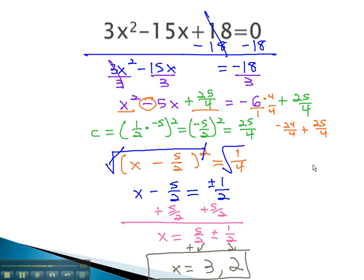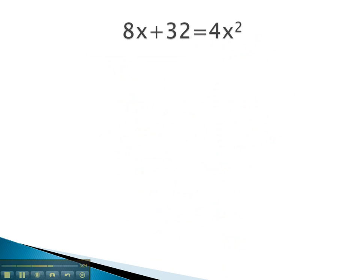Let's take a look at one more example, which we can solve by this complete the square method. In this problem, we'll separate the variables and exponents by moving all the x's over to the right side by subtracting 8x. 32 equals 4x squared minus 8x.